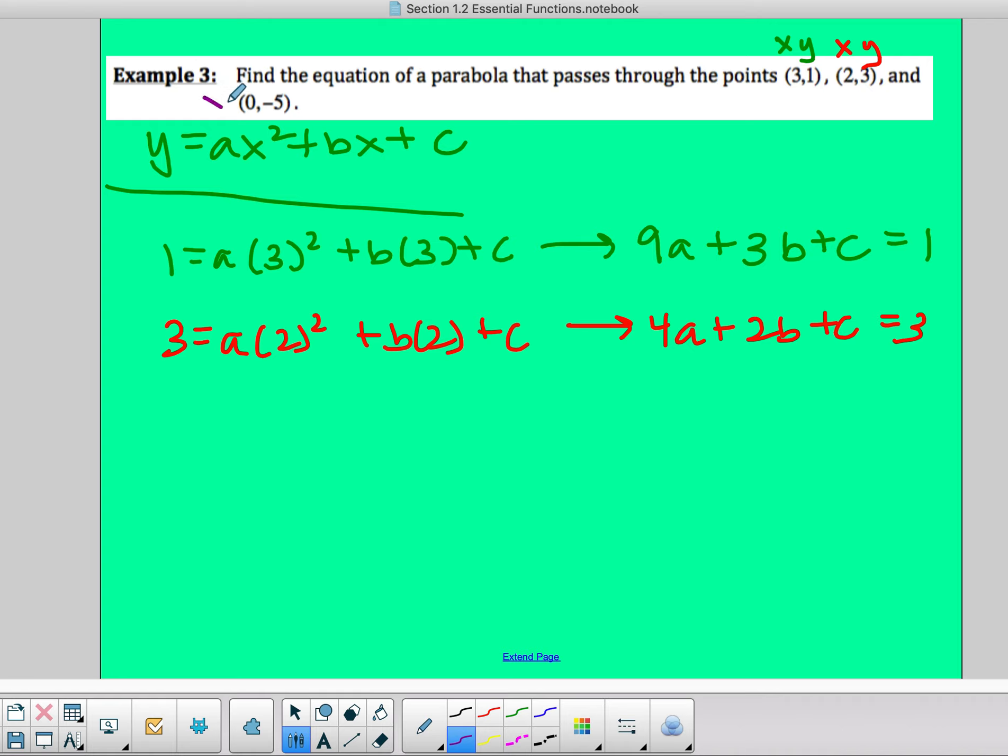And then the last one we got, x, y, plugging it all in. So I have negative five equals a times zero squared plus b times zero plus c.